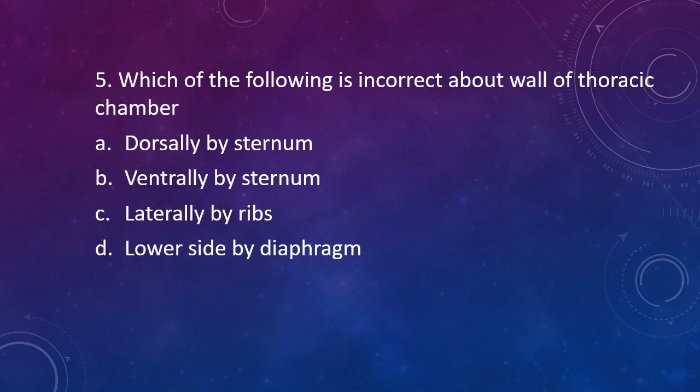Question 5. Which of the following is incorrect about the wall of thoracic chamber? Option A - Dorsally made by sternum, Option B - Ventrally made by sternum, Option C - Laterally made by ribs, Option D - Lower side by diaphragm. The answer is Option A, dorsally made by sternum. It's incorrect. Dorsally, the thoracic chamber is made by vertebral column.